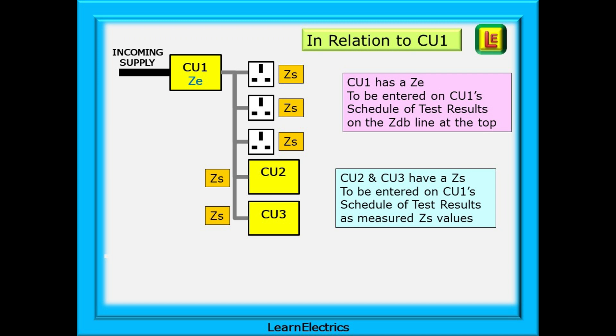In relation to CU1 certificates and test schedule, what have we got here? We have a consumer unit with the incoming supply going to it. We measure the earth fault loop impedance at the main switch and this is ZE. It is entered as ZE on the certificate supply details and as ZDB on the schedule of test results. CU2 and CU3 will have the loop impedance measured at their own main switches and these will be recorded as ZS values on CU1's schedule of test results.